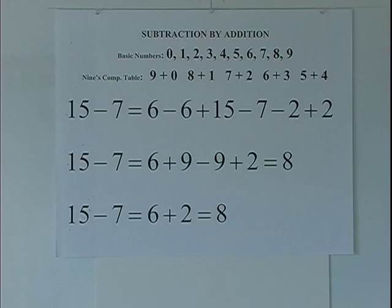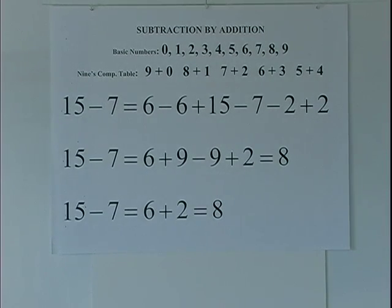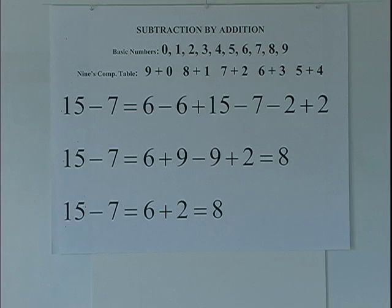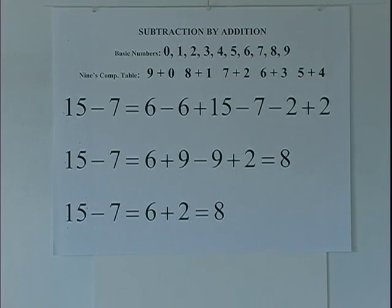How many operations did I do when I did subtraction by subtraction? I did a subtraction here, one here, one here — that's three subtractions — and then one addition. So I did four operations total to do subtraction by subtraction.